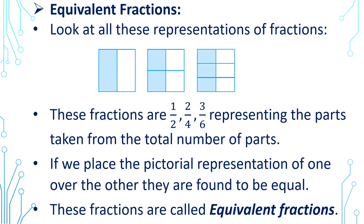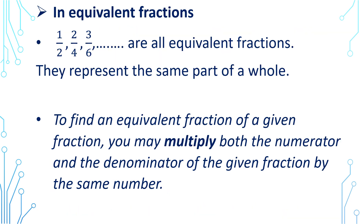For equivalent fractions, look at all these representations of fractions. In this figure, the fractions are 1 by 2, 2 by 4, and 3 by 6, representing the parts taken from the total number of parts. If we place the pictorial representations one over the other, they are found to be equal. These fractions are called equivalent fractions. 1 by 2, 2 by 4, 3 by 6, and so on are all equivalent fractions — they represent the same part of a whole.